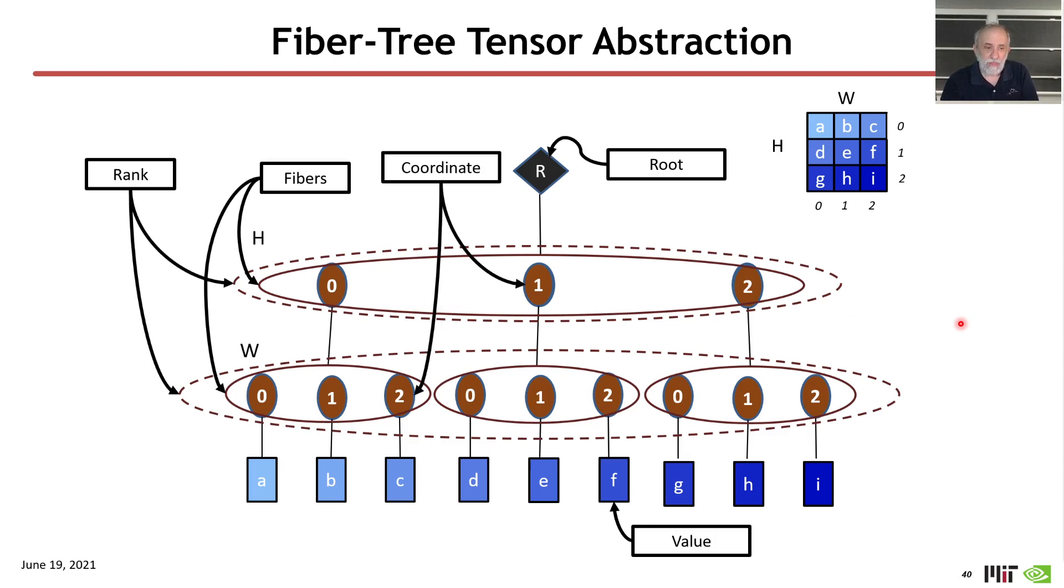In summary, our terminology for the fiber tree abstraction is that we have a root of the tree. The root points to a fiber in the top rank. The top rank always has exactly one fiber in it, and that fiber has a set of coordinates. Each of those coordinates at the middle ranks has a reference to a fiber in the next rank, and the coordinates in the bottom rank have a reference to the final value of the tensor, of a point in the tensor.